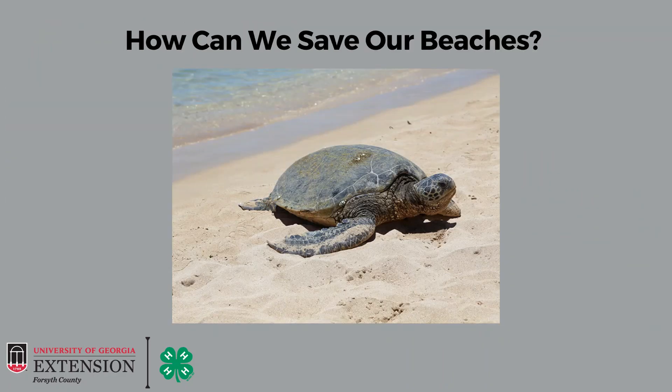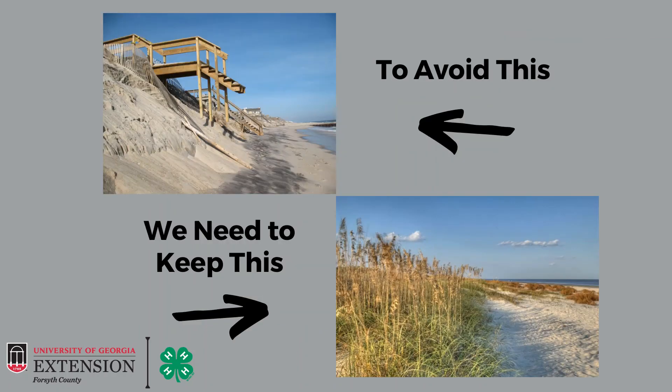But if some of our beaches are eroding away, how do we save them? In order to avoid our piers and other structures looking like the picture on the top, we need to keep what's shown in the picture on the bottom. So let's talk about what those things are and how we can accomplish that.